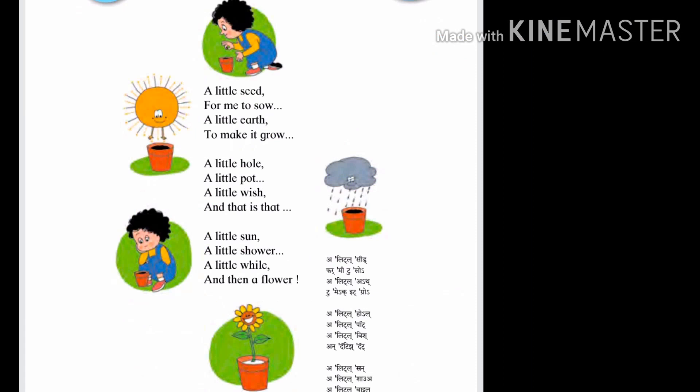Now children, we discuss about the detailed meaning of this poem. A little seed for me to sow, a little earth to make it grow.